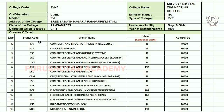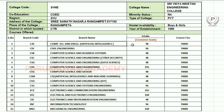Coming to courses offered, our college offers 15 branches for engineering. We will look at the branch-wise counseling seats. Computer Science and Engineering with Artificial Intelligence has 48 seats.